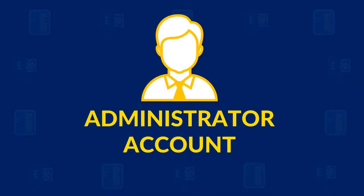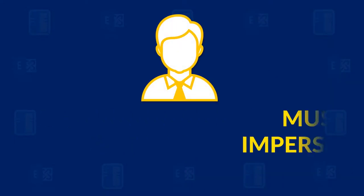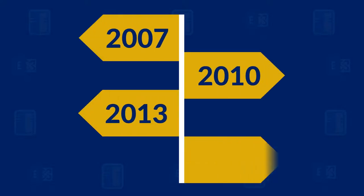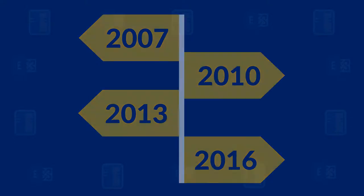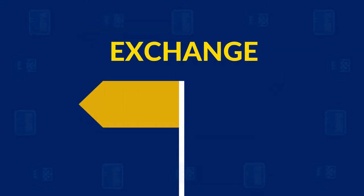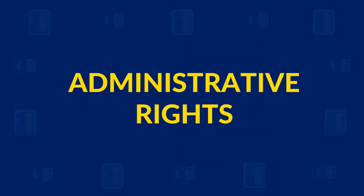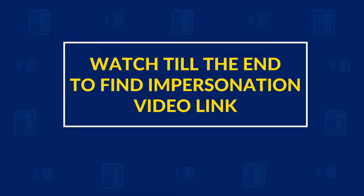Also, the administrator account must be impersonated for Exchange versions 2007, 2010, 2013, and 2016. And in the case of Exchange 2000 and 2003 versions, the mailboxes should have complete administrative rights. Watch till the end of this video to find the impersonation video link.